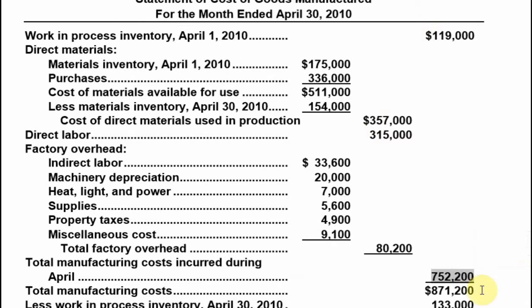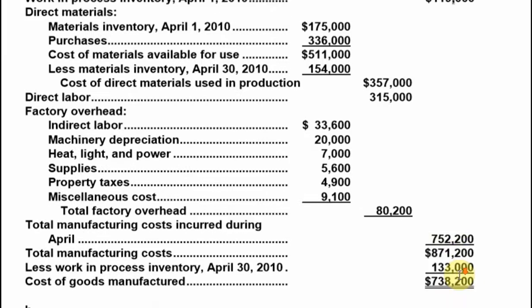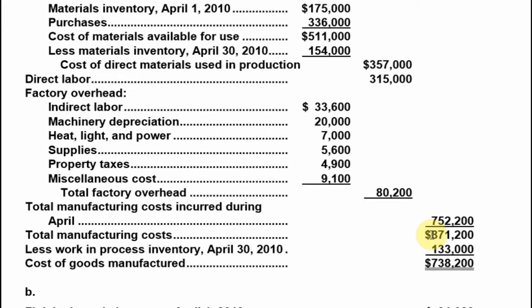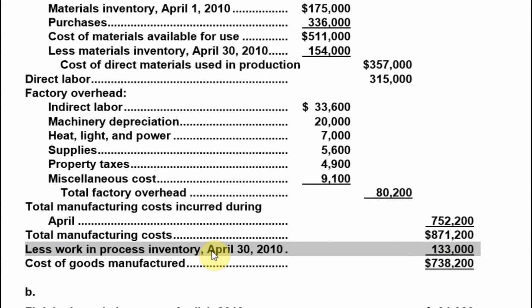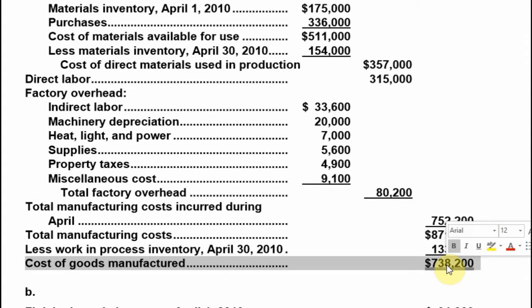We add direct material, direct labor, and factory overhead together to get the total manufacturing cost incurred. Adding work in process at the beginning from the top, plus seven hundred fifty two thousand two hundred, gives us a total of eight hundred seventy one thousand two hundred. We then subtract work in process ending inventory to arrive at cost of goods manufactured.